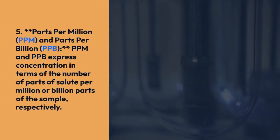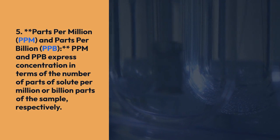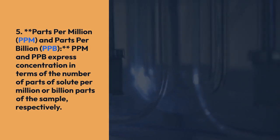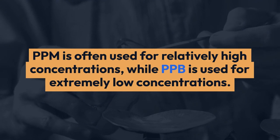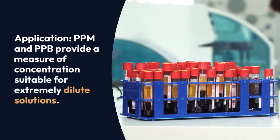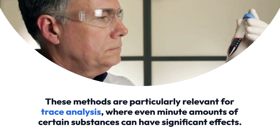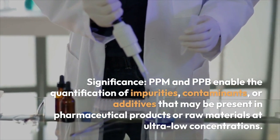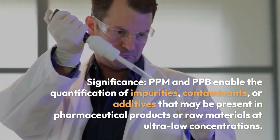Parts per million (ppm) and parts per billion (ppb) express concentration in terms of the number of parts of solute per million or billion parts of solution. Ppm is often used for relatively high concentrations, while ppb is used for extremely low concentrations. These methods are particularly relevant for trace analysis, where even minute amounts of certain substances can have significant effects. PPM and PPB enable the quantification of impurities, contaminants, or additives present in pharmaceutical products or raw materials at ultra-low concentrations.